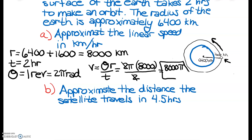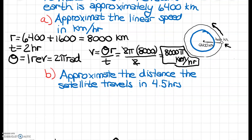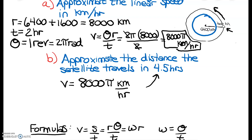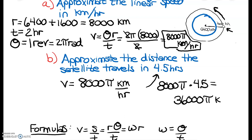That is the linear speed — 8000π kilometers per hour, because our time was in hours. Now it says to approximate the distance the satellite travels in four and a half hours. We know our rate is 8000π kilometers every hour, so all I have to do is multiply my rate times 4.5 hours: 8000π times 4.5 gives me 36,000π kilometers that the satellite travels in four and a half hours.